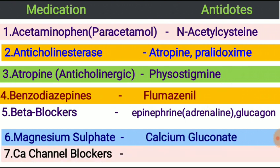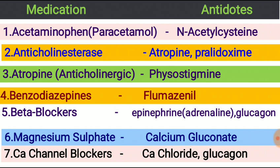Next, calcium channel blockers. The antidote of calcium channel blockers is calcium chloride or glucagon. Calcium channel blockers are mainly used in hypertension; an example is amlodipine. The antidote used is calcium chloride or glucagon.